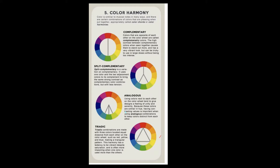Analogous: using colors next to each other on the color wheel tends to give designs a feeling of unity and serenity, because they are from one family — similar but a little different. Because of their similarity, there is less contrast, so creating value differences is important when using analogous combinations to keep the colors visually distinct from each other.